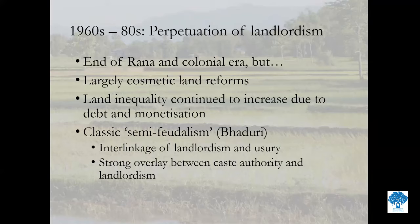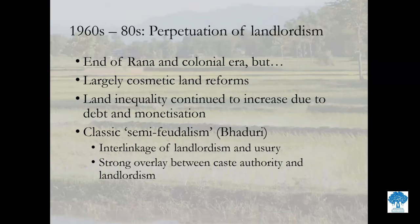From the 1960s to the 1980s, the colonial period ended in the late 1940s in India, and the Rana regime collapsed in Nepal in the 1950s. But in spite of these changes, there was nothing that fundamentally changed the agricultural system. Land reforms were largely ineffective — the only place where land reforms were possibly effective in the subcontinent was West Bengal. In Nepal and Bihar, land reforms remained cosmetic and didn't really redistribute land because of elite capture. Land inequality continued to increase, and monetisation meant more farmers were selling their land because they couldn't pay loans. This was when you began to see the classical semi-feudalism which people like Baduri had spoken about — the interlinkage between landlordism and money lending, with a strong overlap between caste authority and landlord authority.